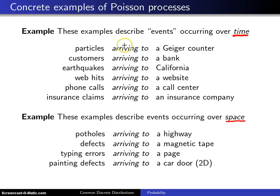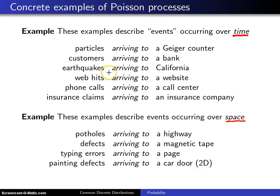Here are a few examples of events occurring over time. You might have particles arriving to a Geiger counter — in this case an event is a particle arrival. You could also have customers arriving to a bank, earthquakes arriving to California over time, web hits arriving to a website, phone calls arriving to a call center, or insurance claims arriving to an insurance company.